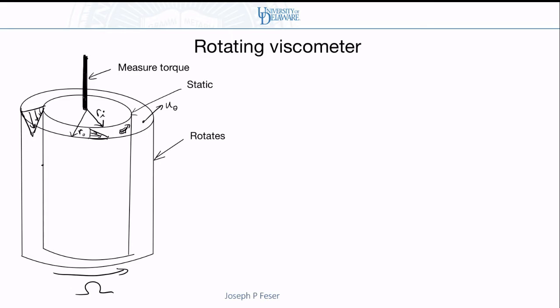So the objective of this example problem is to figure out what the relationship is between how fast I rotate the device and how much torque I measure. And in particular, how do I back out the viscosity if I run this experiment?